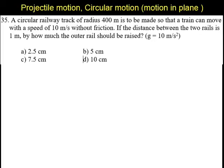A circular railway track of radius 400 meters is to be made so that a train can move with a speed of 10 meters per second without friction. If the distance between the two rails is 1 meter, how much should the outer rail be raised?